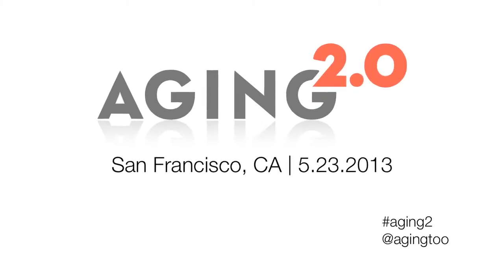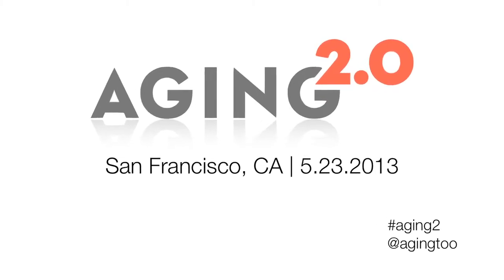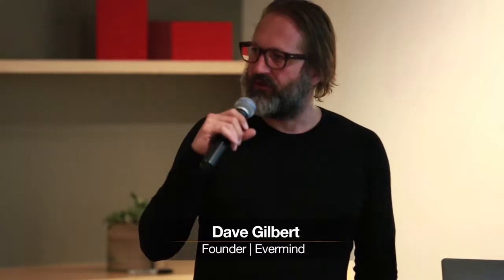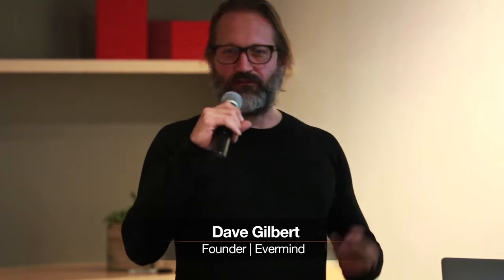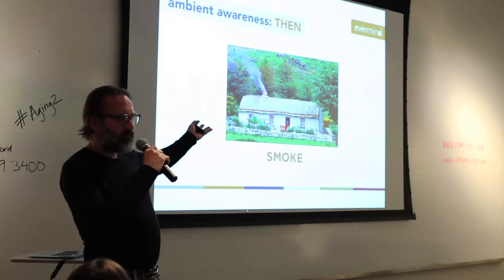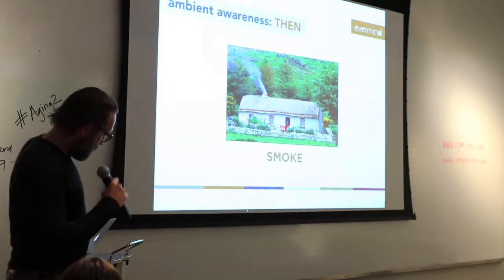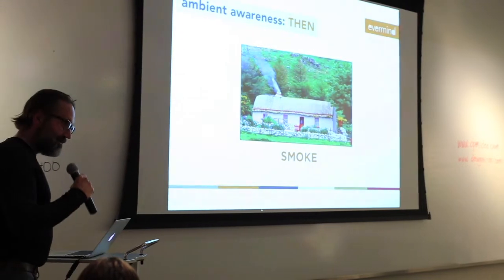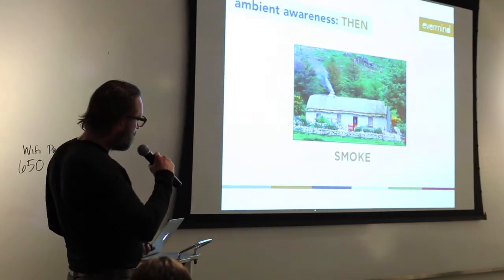In the old days, it was easier to keep track of an older family member because chances are they lived on your property. You could look over and see that grandma's house had smoke coming from the chimney — she was building a fire, probably making breakfast, making coffee. You knew she was good just by looking at that ambient signal. We don't live in that world anymore, but we think our approach is similar.